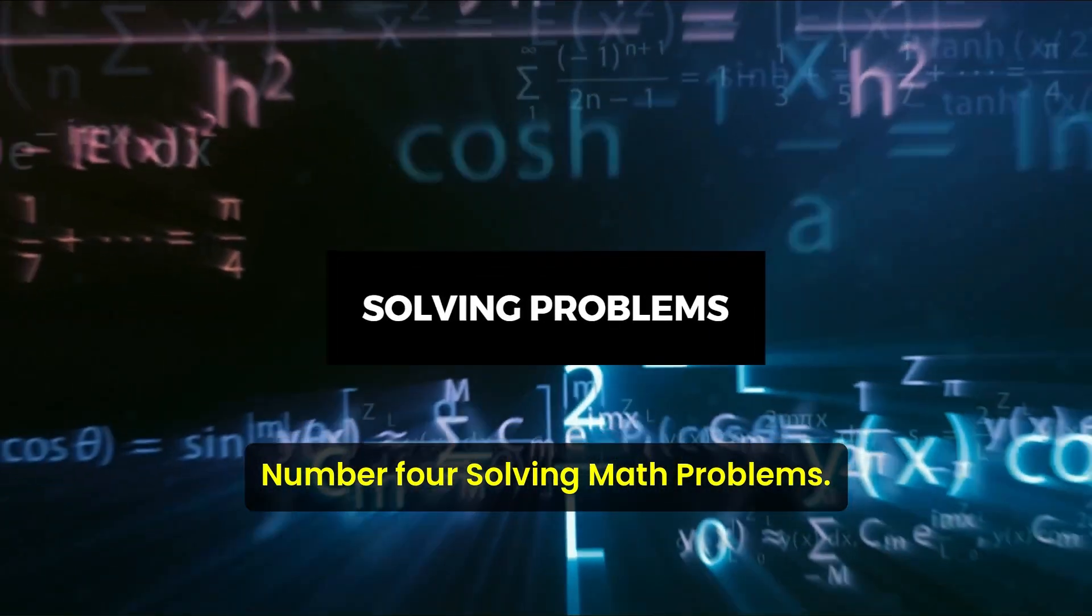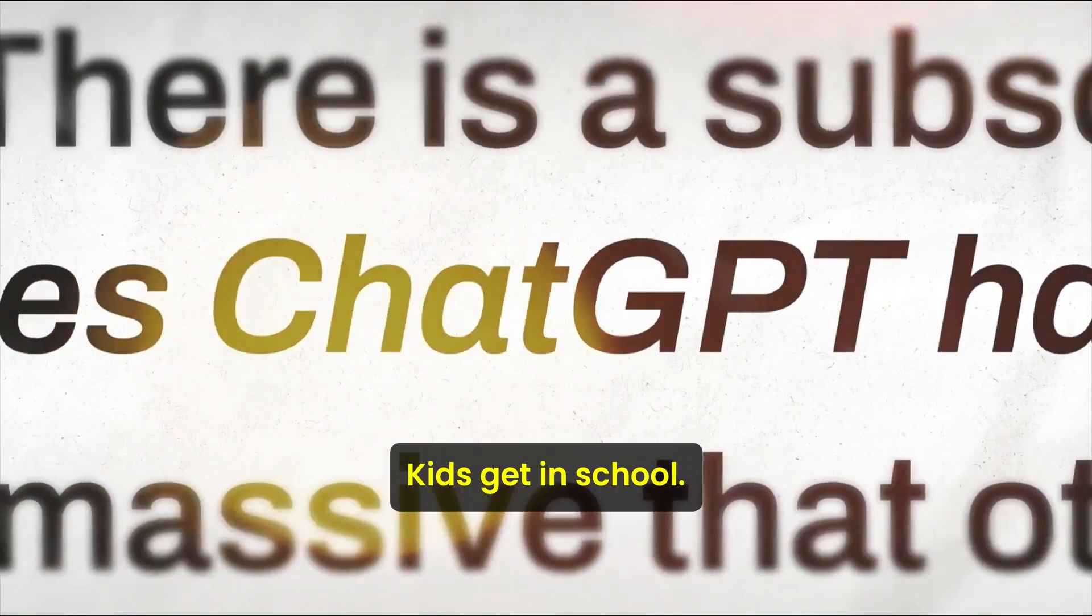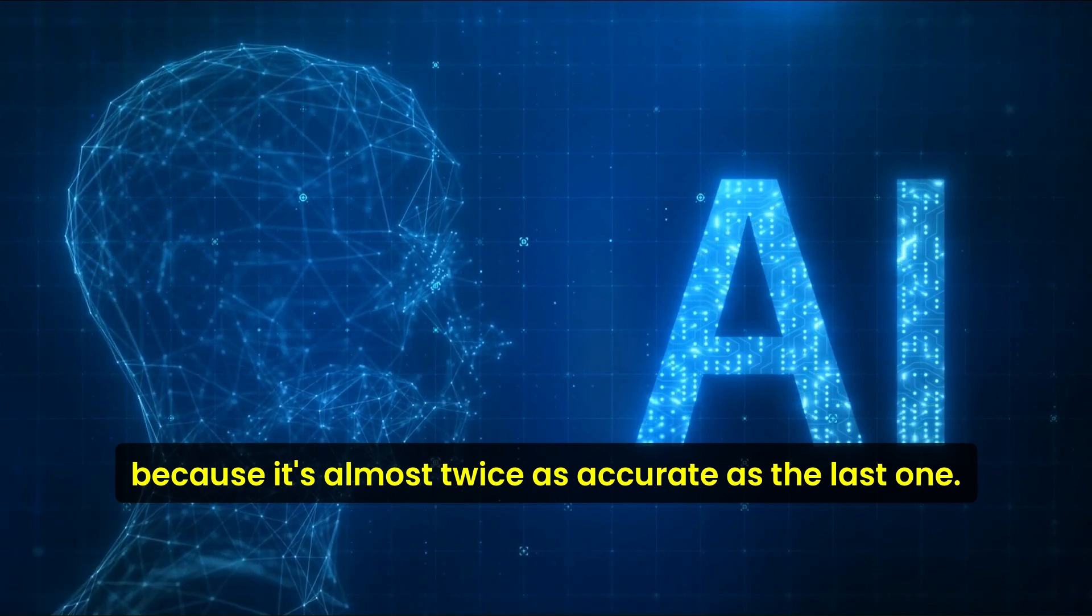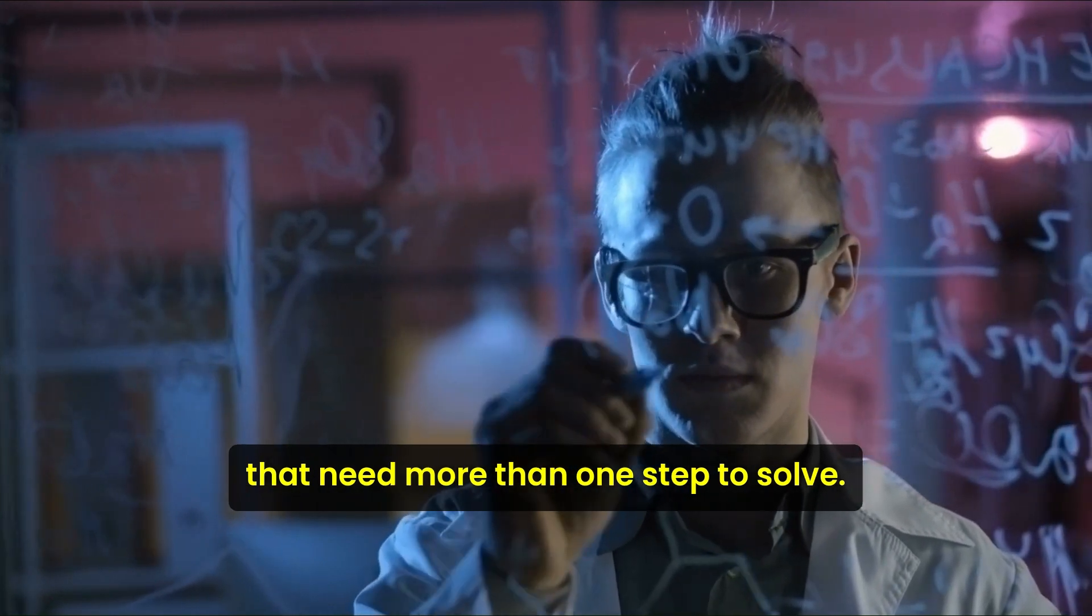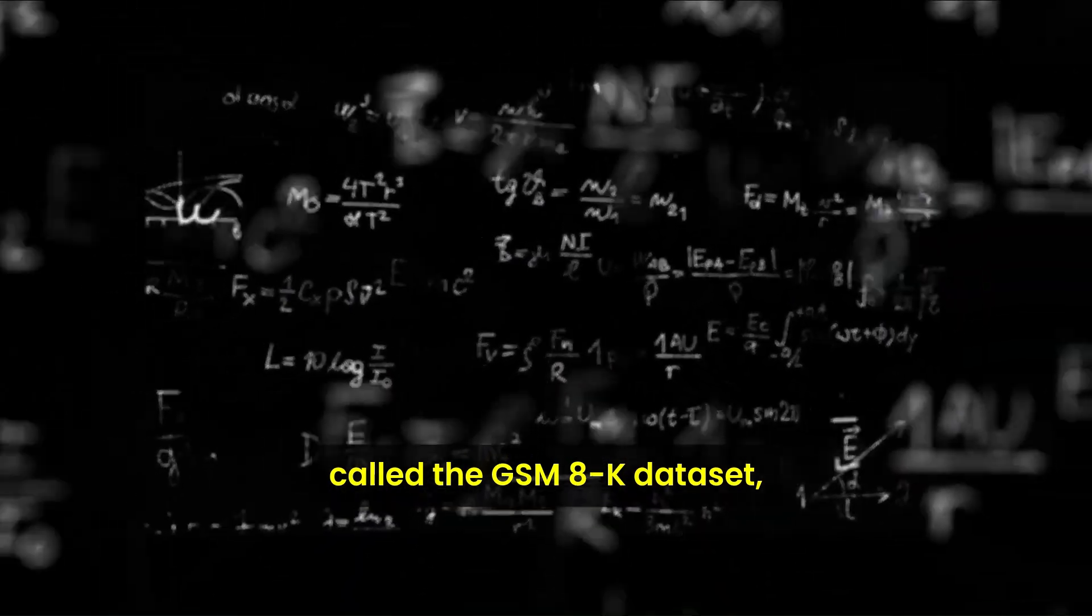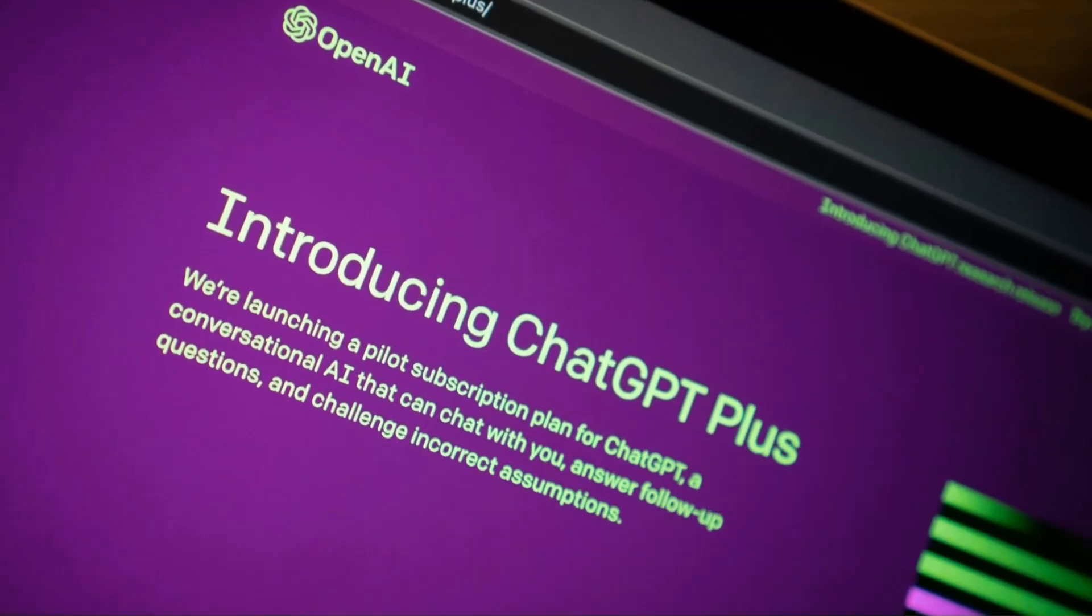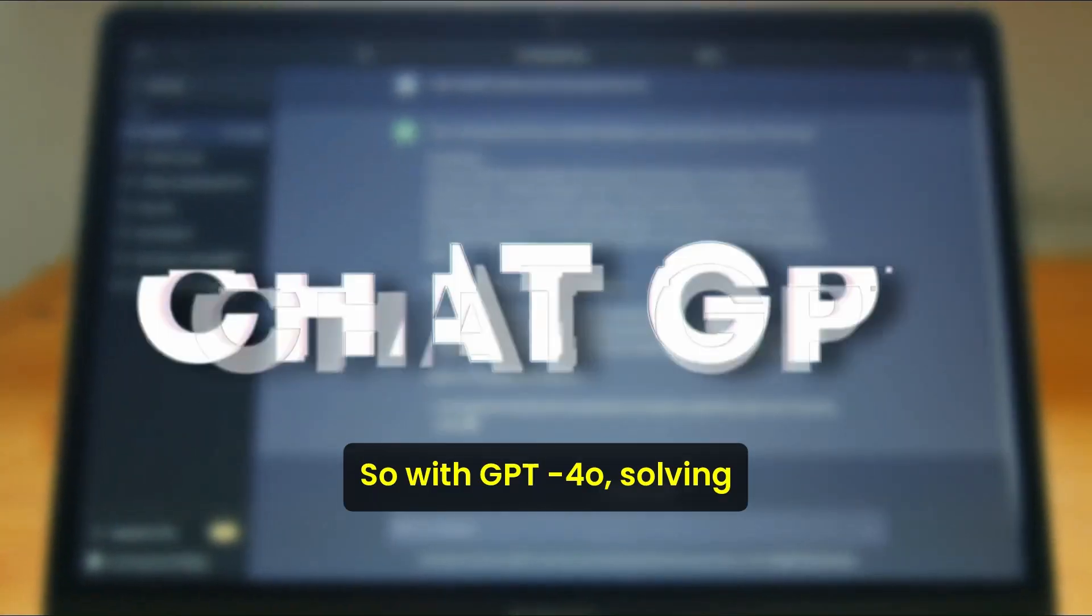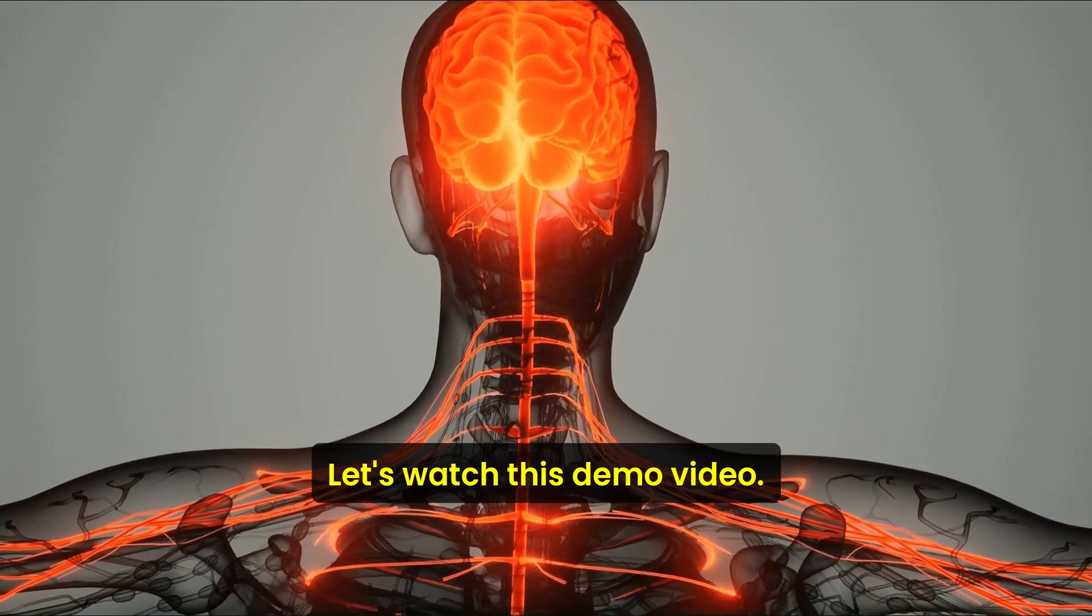Number four, solving math problems. GPT-4.0 is really good at solving math problems kids get in school. It's way better than older versions because it's almost twice as accurate as the last one, GPT-3. It can figure out even the tricky problems that need more than one step to solve. GPT-4.0 uses a big collection of math problems called the GSM-8K dataset, which helps it understand and solve lots of different kinds of problems. And when it gives the answer, it does it in words that are easy for people to understand. So with GPT-4.0, solving math problems is easier and more accurate than ever before. Let's watch this demo video.